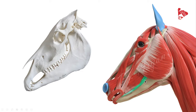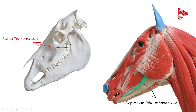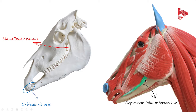The next muscle is the depressor labii inferioris, or the depressor muscle of the lower lip. This muscle originates from the cranial border of the mandibular ramus and inserts to the orbicularis oris. The function of this muscle is to depress and retract the lower lip.